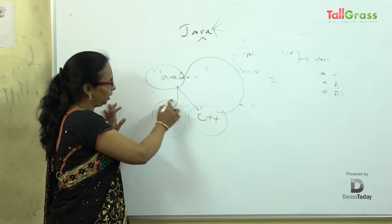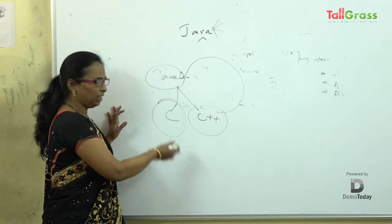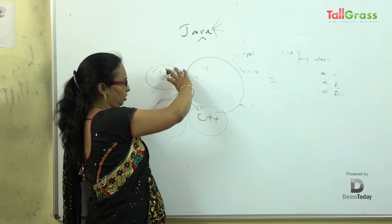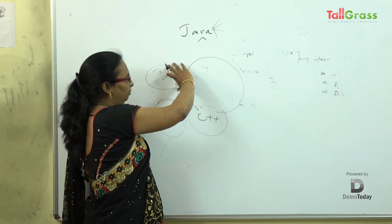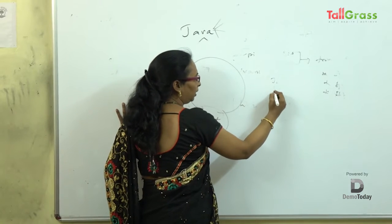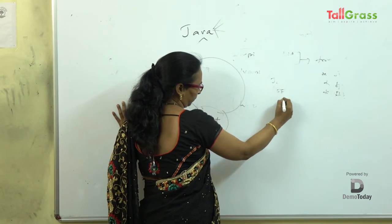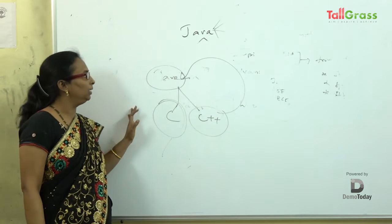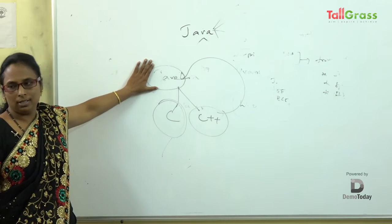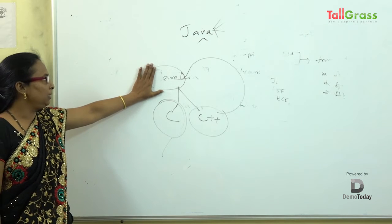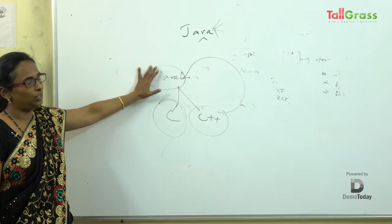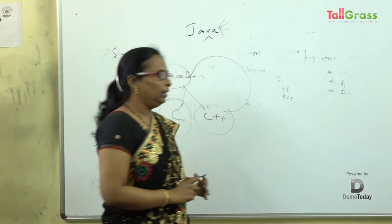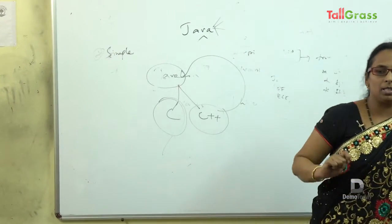From C, what we inherit into Java are all the data types, the conditional statements, and other constructs. People coming from non-computer backgrounds like EEE, ECE, mechanical, or civil can learn Java in a very simple manner. The reason behind that is the first feature of Java itself — they say it is simple. Java has been developed by Mr. James Gosling.